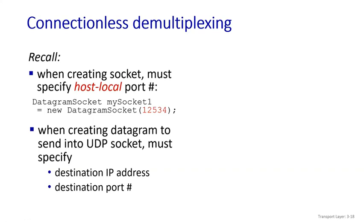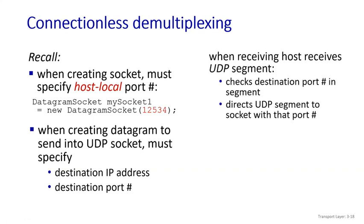All these things are sent with the help of segments, but the IP address and port address are the two major things. When the receiving host receives the UDP segment, the sender has done its part. On the receiver side, you check the destination port to verify it has been reached correctly. Because UDP is connectionless, it can introduce various errors, so we must check the destination port address to ensure the message is error-proof. The destination port address must be in the segment.